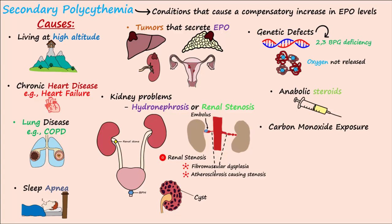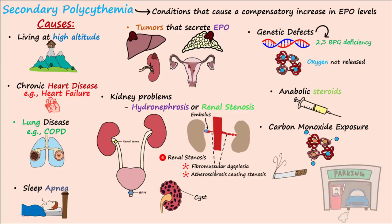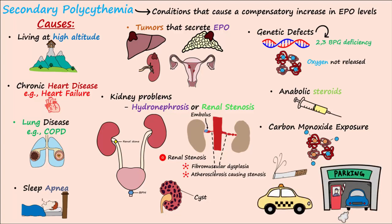Carbon monoxide exposure may also lead to polycythemia. Carbon monoxide has a greater affinity for hemoglobin than oxygen does, so it displaces oxygen and causes the kidney to release more EPO to compensate for low oxygen levels. Chronic carbon monoxide exposure may be from smoking or from occupational exposure to exhaust fumes, such as for those working in parking garages or taxi drivers in congested cities.